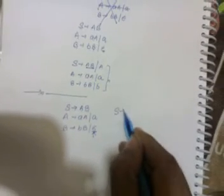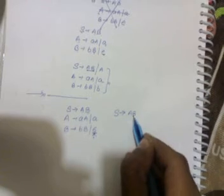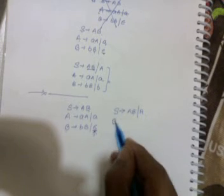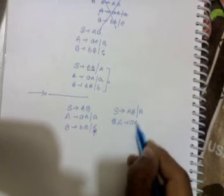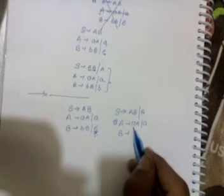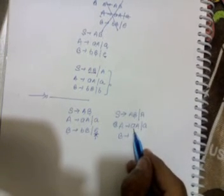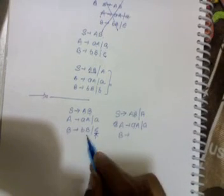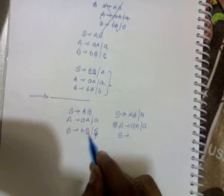So the grammar is S produces AB. Now we have to put epsilon in place of B, then grammar produces A. A produces aA oblique a. And B produces - since there is no capital B in this production, so we have to write this production as it is. Now in the third production there's B occurs, so we have to write B produces BB.